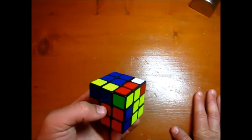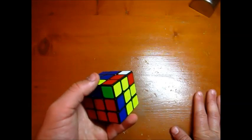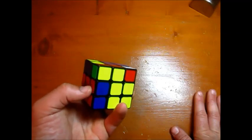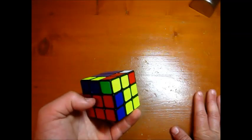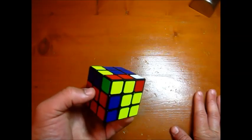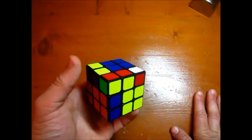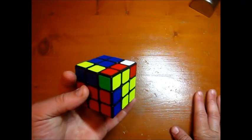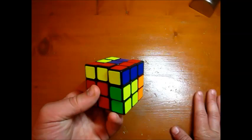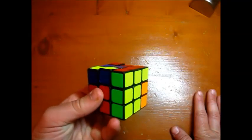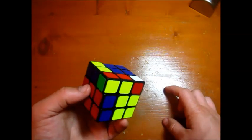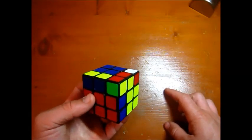And if you look, this edge here is oriented incorrectly and this edge here is oriented incorrectly with respect to R and U. And what I mean by that is that if I insert this edge using the R U approach, which is obviously U R U prime R prime,